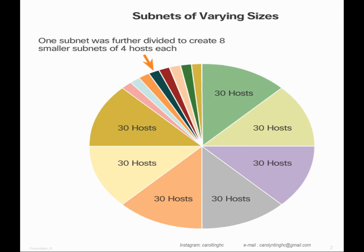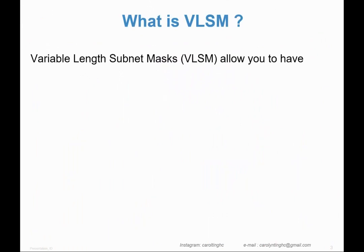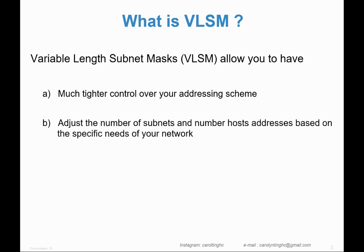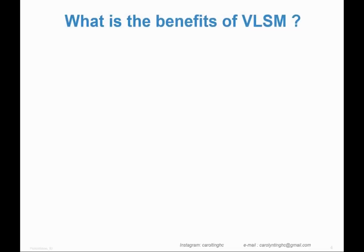That's why we introduced Variable Length Subnet Mask, called VLSM. VLSM allows you to have much tighter control over your addressing scheme — adjusting the number of subnets and host addresses based on the specific needs of your network. It is supported by protocols such as RIP version 2, OSPF, EIGRP, DUAL, IS-IS, and BGP.